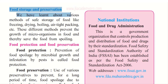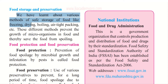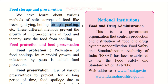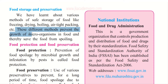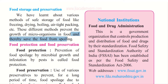Let's learn about food storage and preservation. We have learned about various methods of safe storage of food like freezing, drying, boiling, airtight packing, etc. Freezing is when we keep food in the refrigerator. We dry certain foods like papads and some pickles. We also boil our food, and there are packed foods sealed in airtight containers. All these methods prevent the growth of microorganisms in food, thereby saving the food from spoiling.